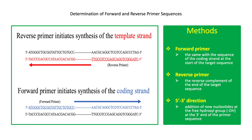The forward and reverse primers will bind to the complementary strand and guide the DNA polymerase to synthesize the complementary bases on the free hydroxyl group at the 3' end of the primer sequence. The sequence of the forward primer is the same as the sequence of the coding strand at the start of the target sequence. Synthesis of the complementary bases occurs only on the existing free hydroxyl group at the 3' end of the primer.